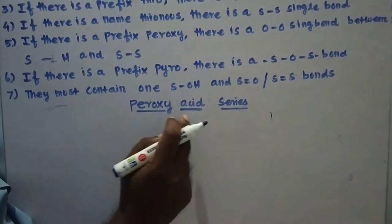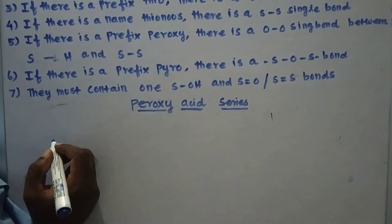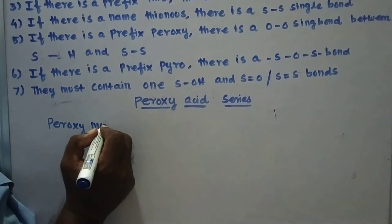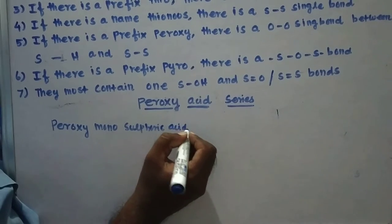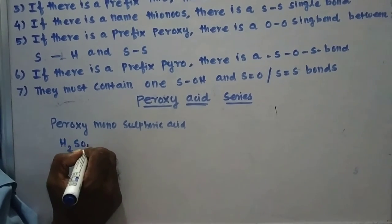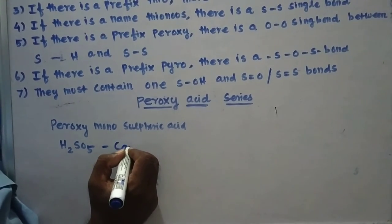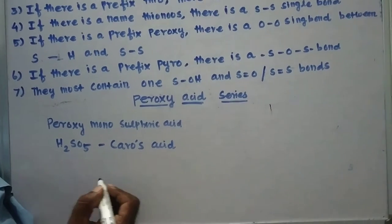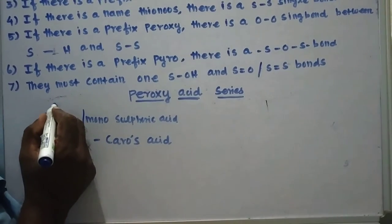Now we are going to discuss the peroxy acid series. First, peroxy monosulfuric acid — its formula is H₂SO₅, sometimes also called Caro's acid. Peroxy means it creates an O–O single bond. Monosulfuric means only one sulfur atom. Sulfuric means the valency of sulfur is 6.